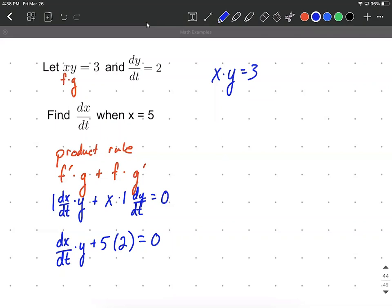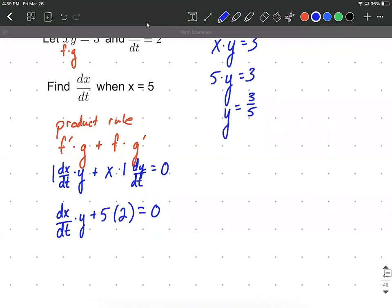We are given an x value of 5, so 5 times y equals 3. By dividing on both sides, we can get y equals 3/5. That'll give us a value we can plug in here.